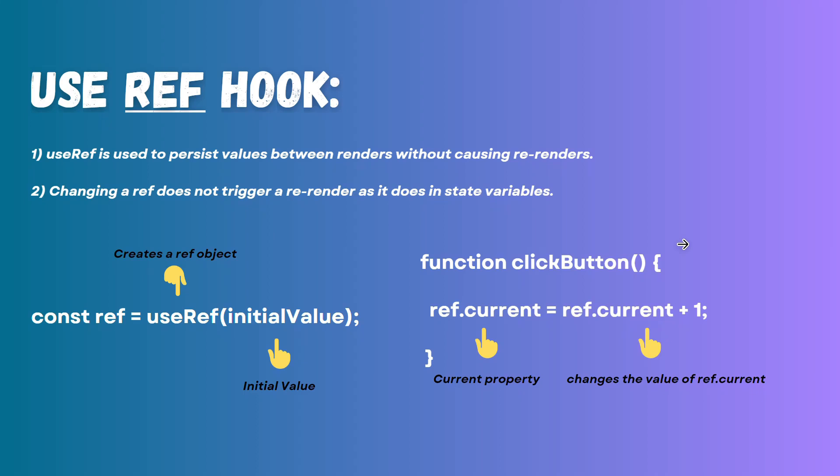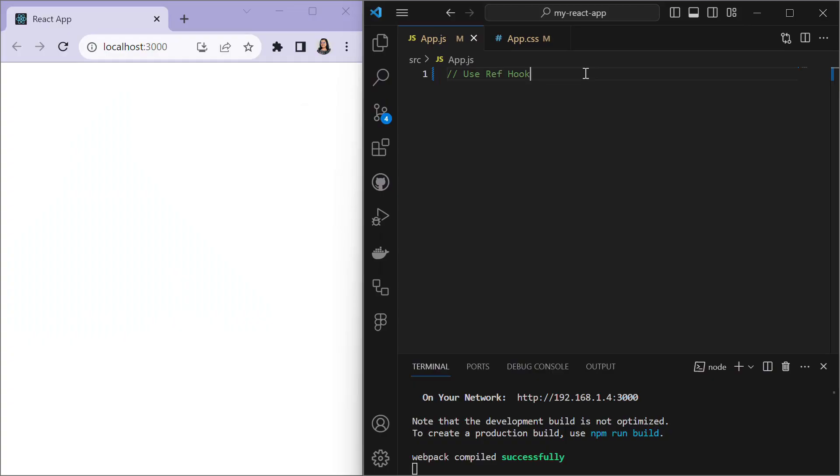Initially, the current property is set to the value you have passed as an argument to useRef. This current property can be changed to hold different values and will persist between renders of your component. Changing a ref will not trigger a re-render as it does with a state variable.